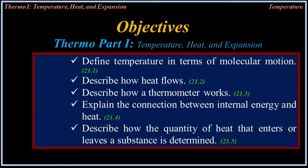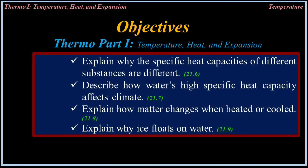Learning objectives: Define temperature in terms of molecular motion. Describe how heat flows. Describe how a thermometer works. Explain the connection between internal energy and heat. Describe how the quantity of heat that enters or leaves a substance is determined. Explain why the specific heat capacities of different substances are different. Describe how water's high specific heat capacity affects climate. Explain how matter changes when heated or cooled. Explain why ice floats on water.